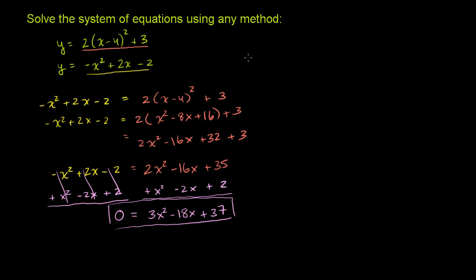Our solutions are going to be x is equal to negative b. Well, b is negative 18, so negative b is positive 18. So it's 18 plus or minus the square root of 18 squared minus 4 times 3 times c times 37, all of that over 2 times a, 2 times 3, which is 6.